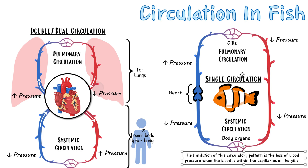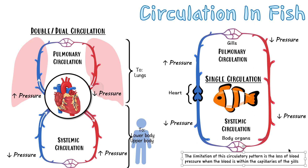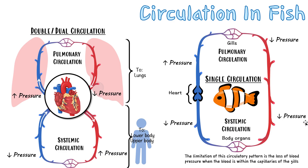The key limitation of fish single circulation compared to humans is the huge loss of blood pressure in the gill capillaries. The blood is pumped out with high pressure, but after the gills the pressure is very low — and it doesn't return to the heart to regain pressure before going to the body. The disadvantage is that there's very low pressure to the systemic circulation. Fish have single circulation; we have double or dual circulation.